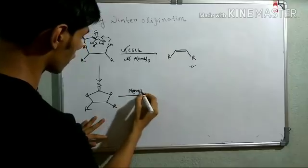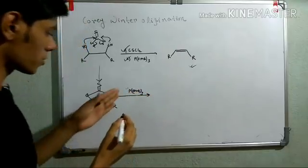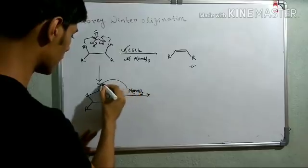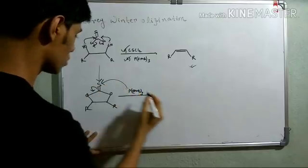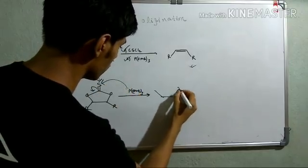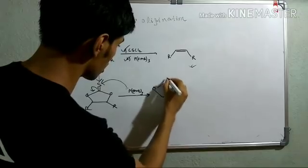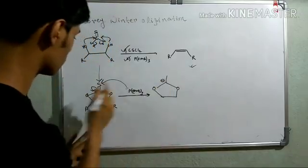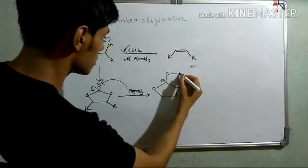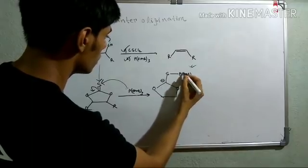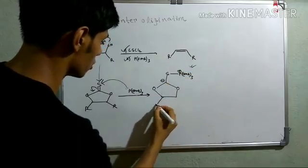So, this is your trimethoxyphosphine. Now, this trimethoxyphosphine, you can see phosphorous has a lone pair. So, it can attack on the sulfur. So, this will give you this negatively charged intermediate here. You will have a negative charge, you can see. And this is P(OMe)3 and this phosphorous will have a positive charge.